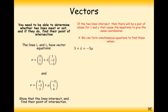What we're going to do is create two simultaneous equations from the x variable and the y variable. Looking at the top row, we've got 3 plus lambda. If the two equations are intersecting, then the x components must match up at some point, so this equals minus 5 lambda. We're setting the whole of this vector equal to the whole of the other vector. The second equation comes from the y variable: 1 minus 2 lambda equals 2 plus mu.